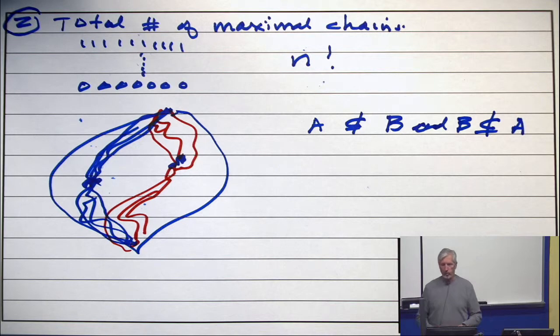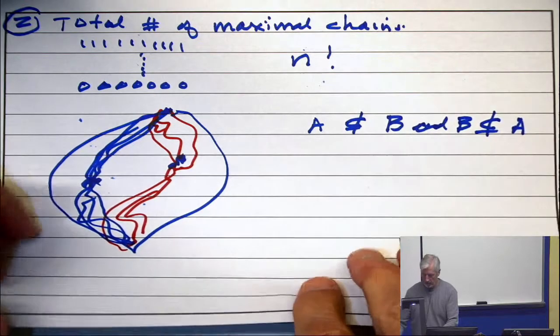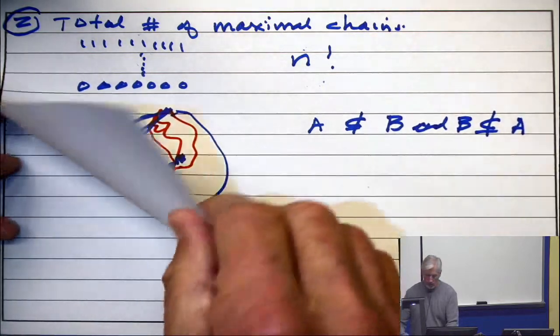Alright, that's detail two. We're going to put this together, and now we're going to show that the width is the size of the largest binomial coefficient. So here's what we do.